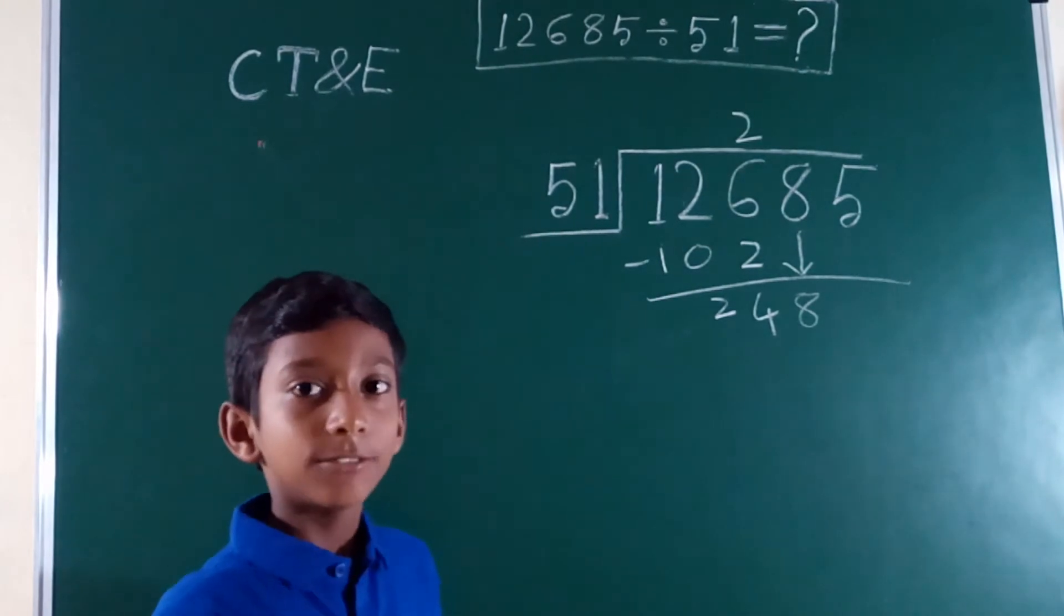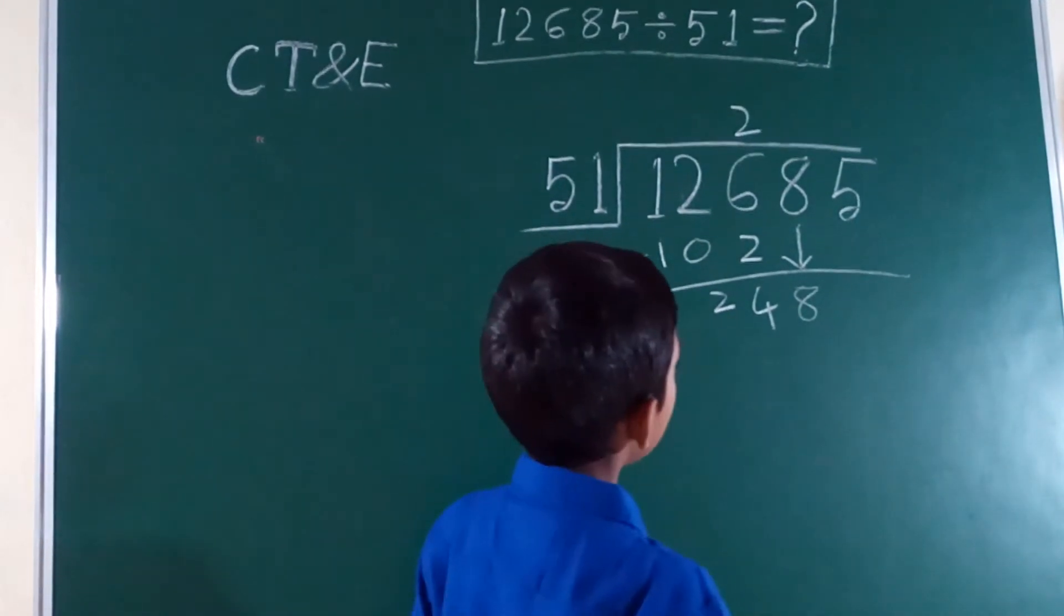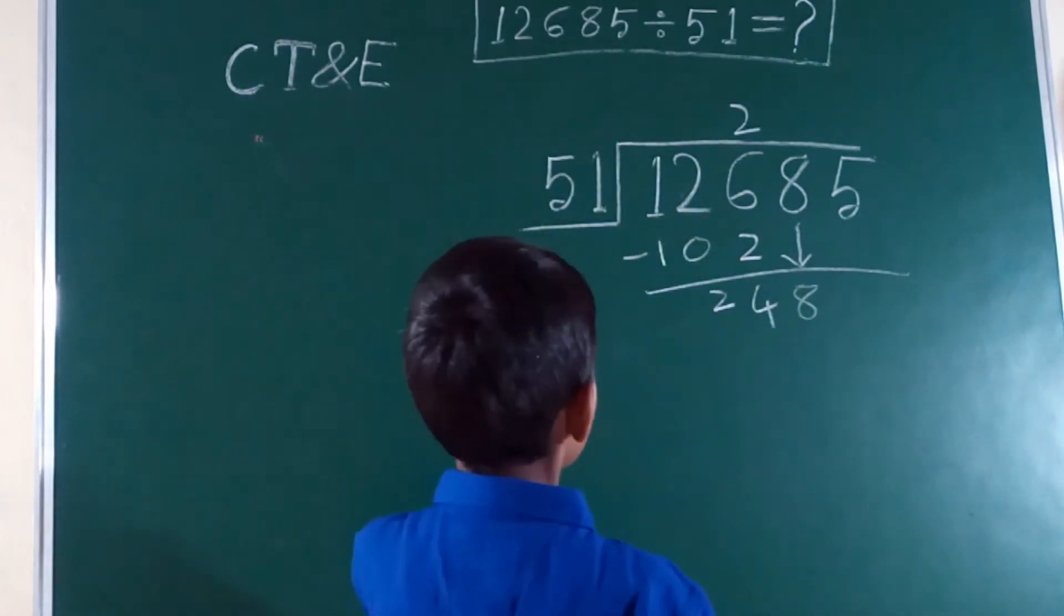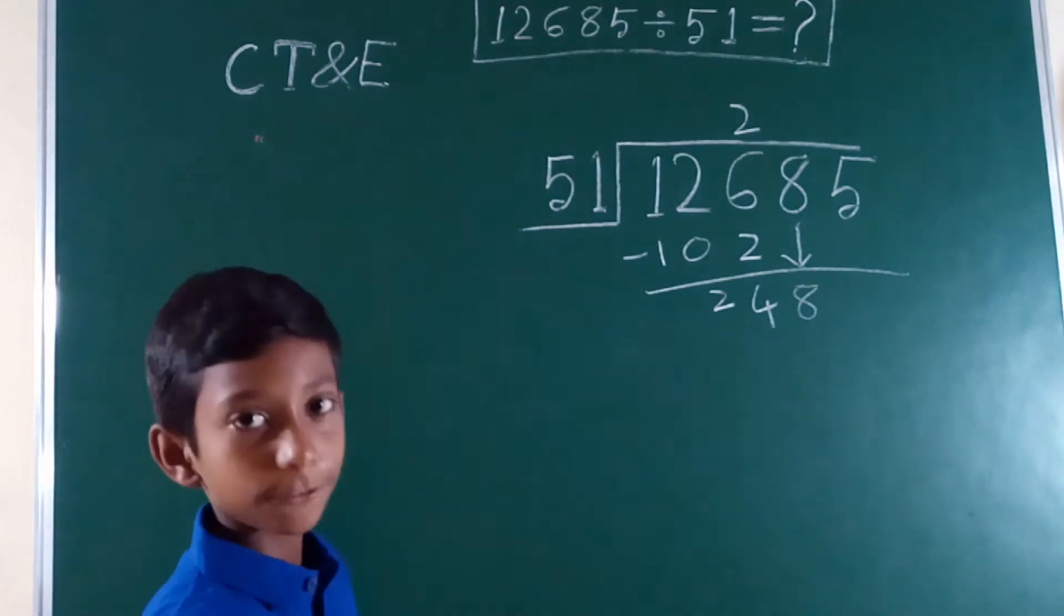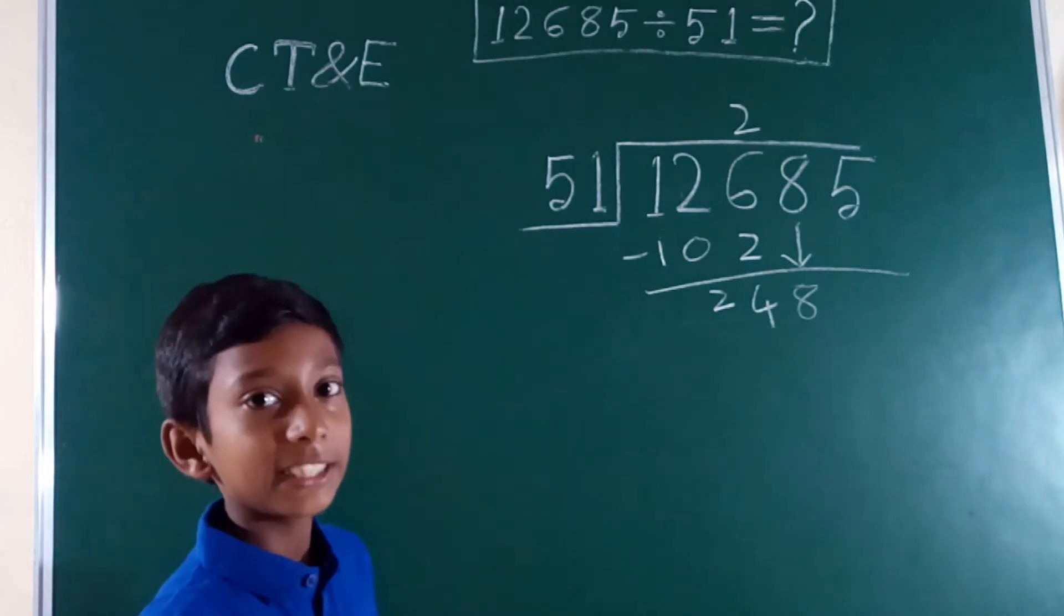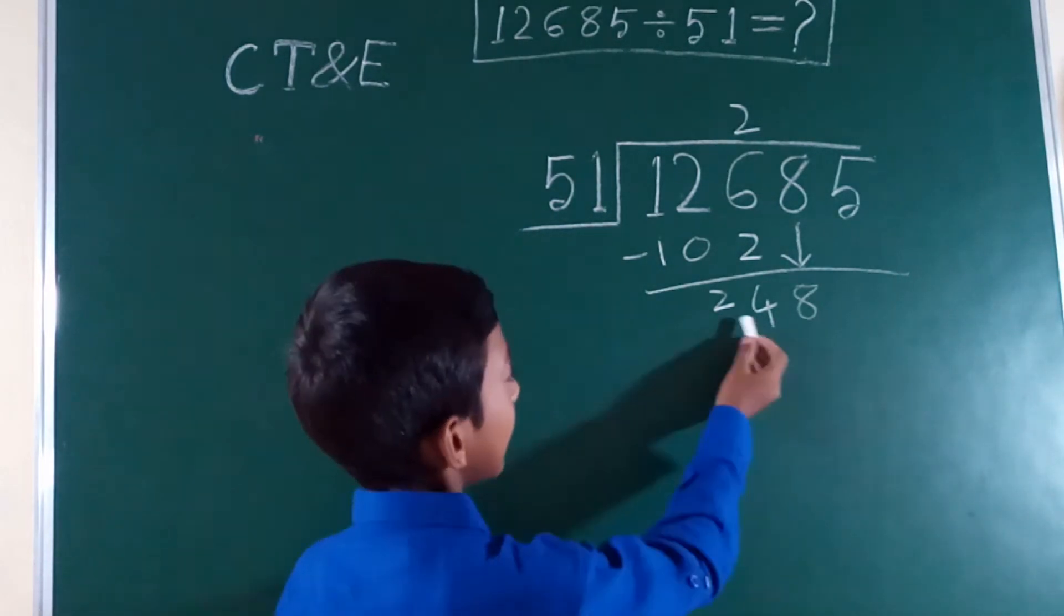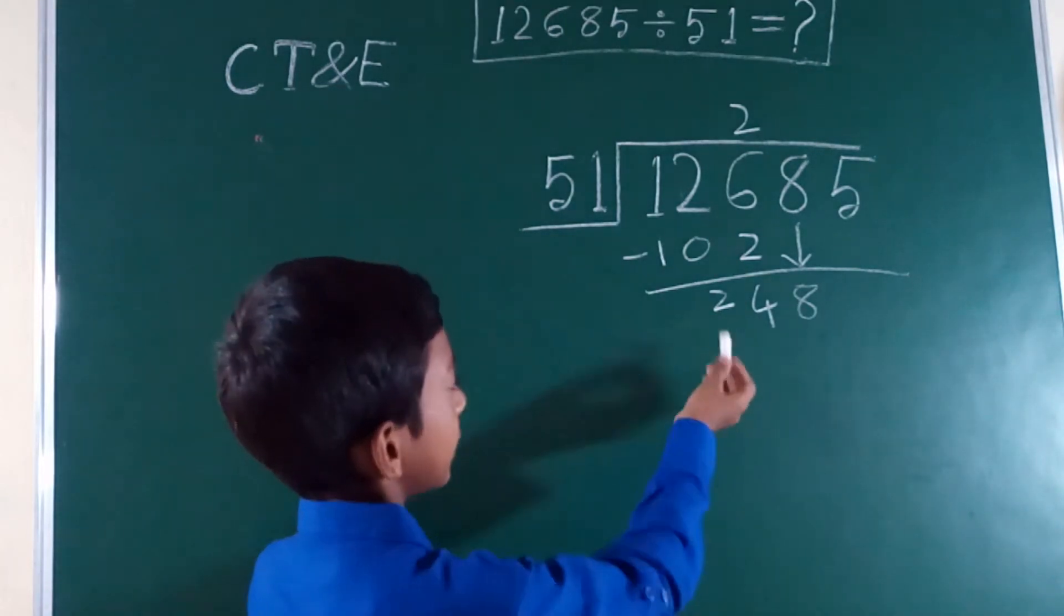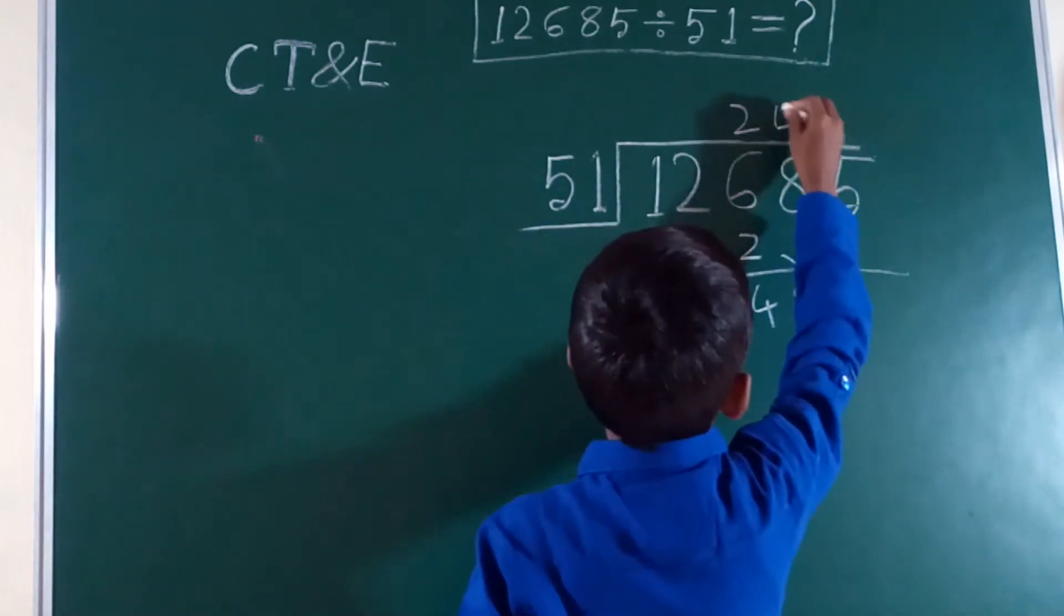Similarly, we have to do this process again. We imagine 8 and 1 are not there, so we count the 5 table so that 24 does not cross. 5 times 1 is 5, 5 times 2 is 10, 5 times 3 is 15, 5 times 4 is 20, 5 times 5 is 25. Since 5 times 5 is 25 is bigger than 24 and 5 times 4 is 20 is smaller than 24, we have to write 4.